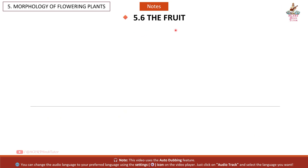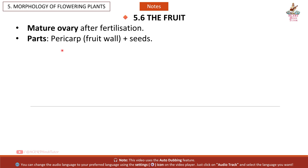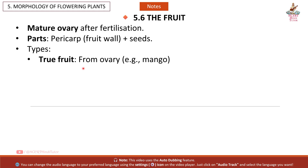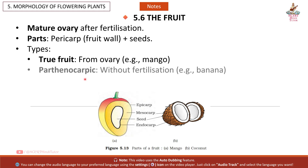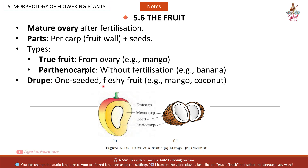5.6 The Fruit: Mature ovary after fertilization. Parts: pericarp (fruit wall) and seeds. Types: true fruit from ovary, e.g. mango; parthenocarpic fruit without fertilization, e.g. banana; drupe — one-seeded fleshy fruit, e.g. mango and coconut. The fruit wall has three layers: outer epicarp, middle mesocarp, and inner endocarp.